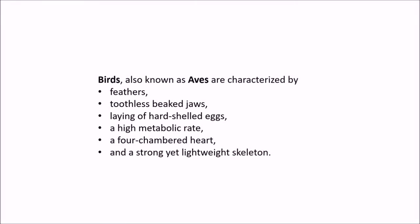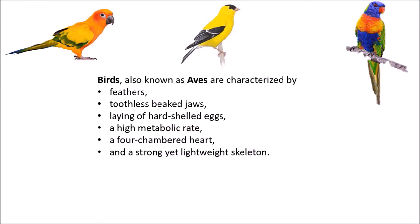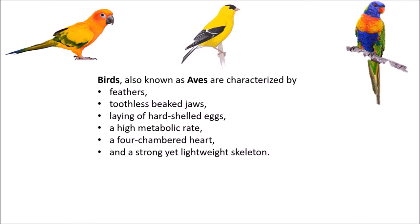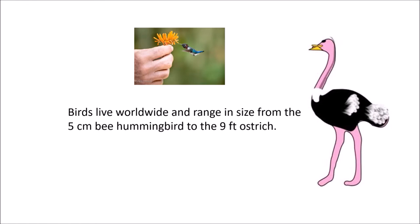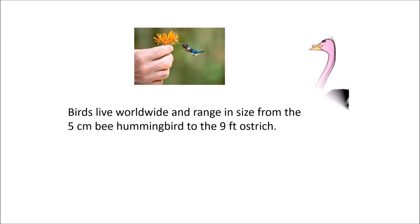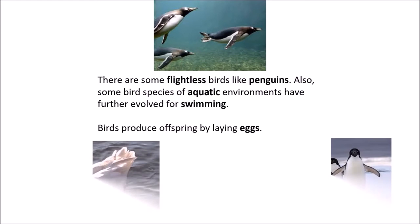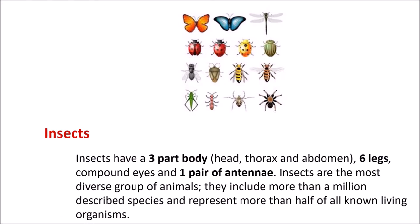Now let me introduce the animals who can fly in the sky. They are the birds, also known as Aves, and they are characterized by feathers, toothless beak jaws, laying of hard-shelled eggs, a high metabolic rate, a four-chambered heart, and a strong yet lightweight skeleton. Birds live worldwide and range in size from the five-centimeter bee hummingbird to the nine-foot ostrich. There are some flightless birds like penguins, and some bird species of aquatic environments have further evolved for swimming. Birds produce offspring by laying eggs.